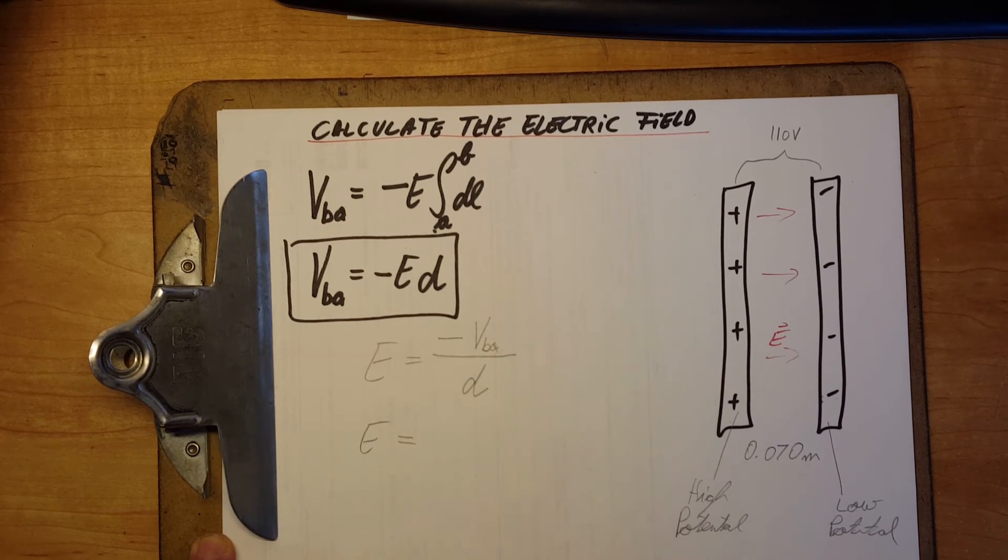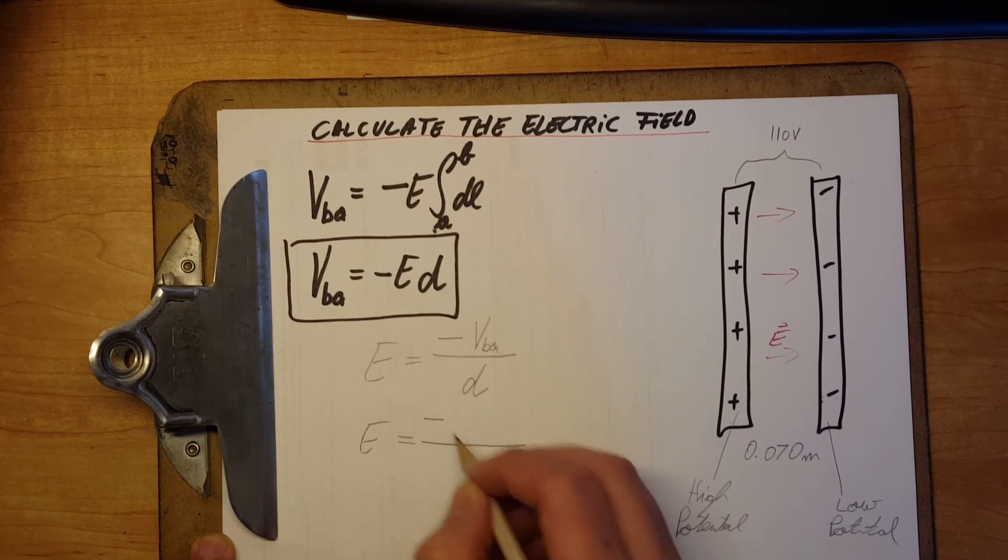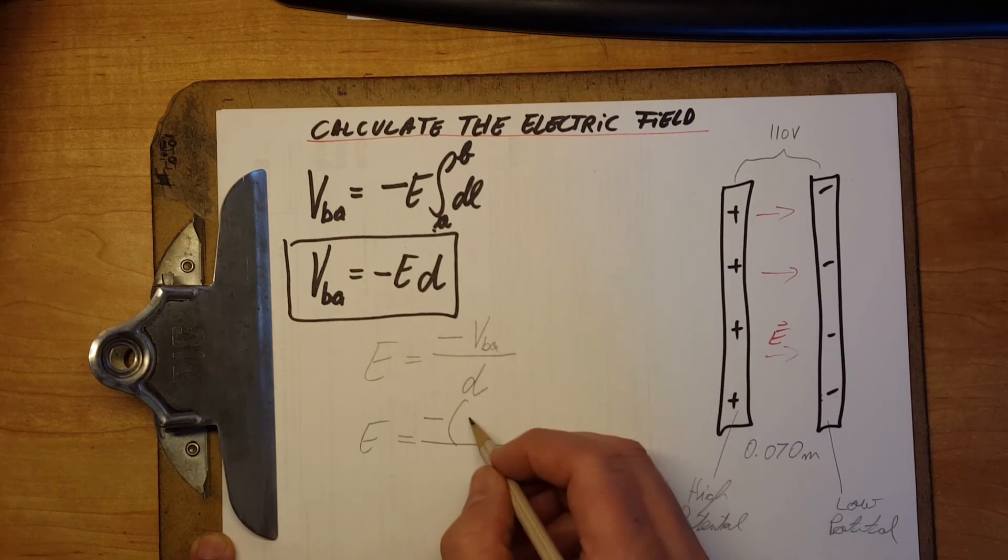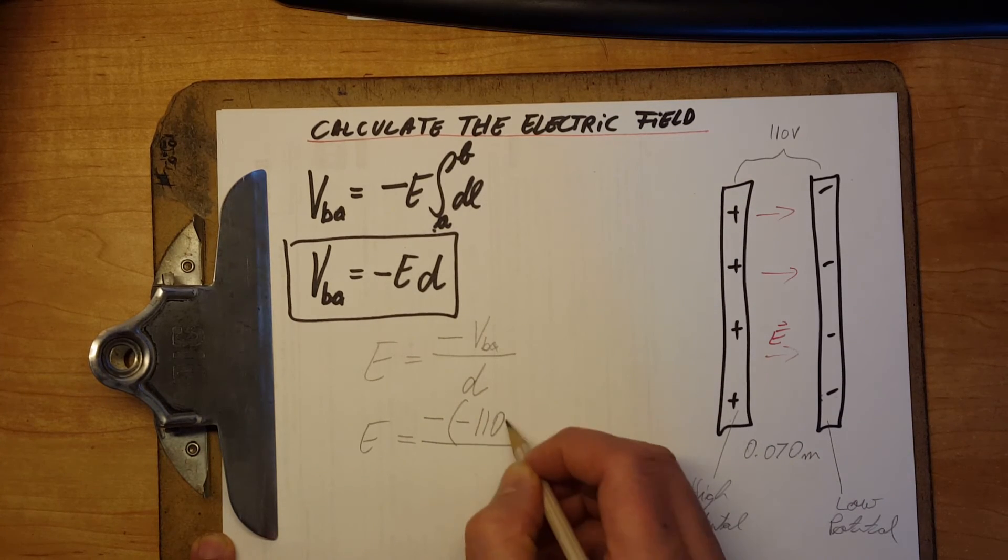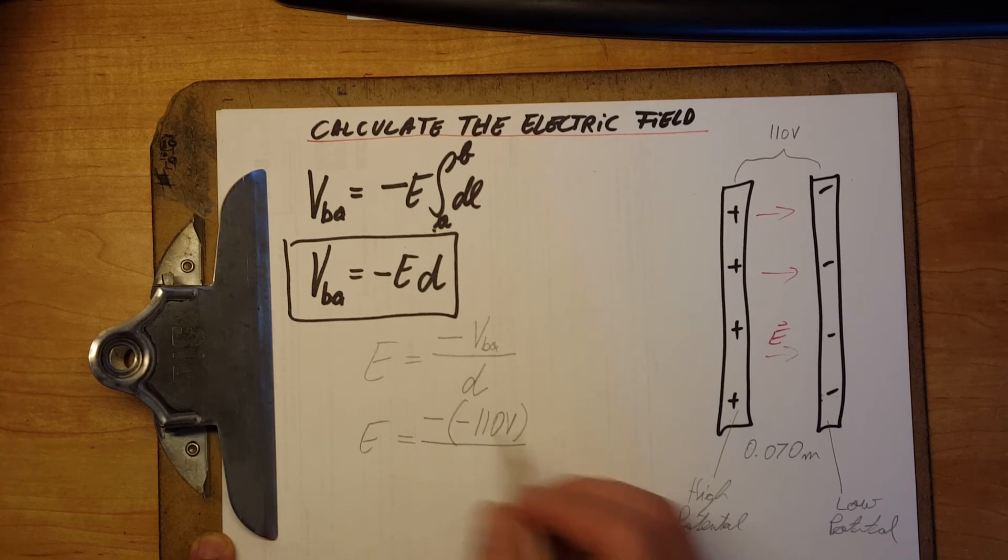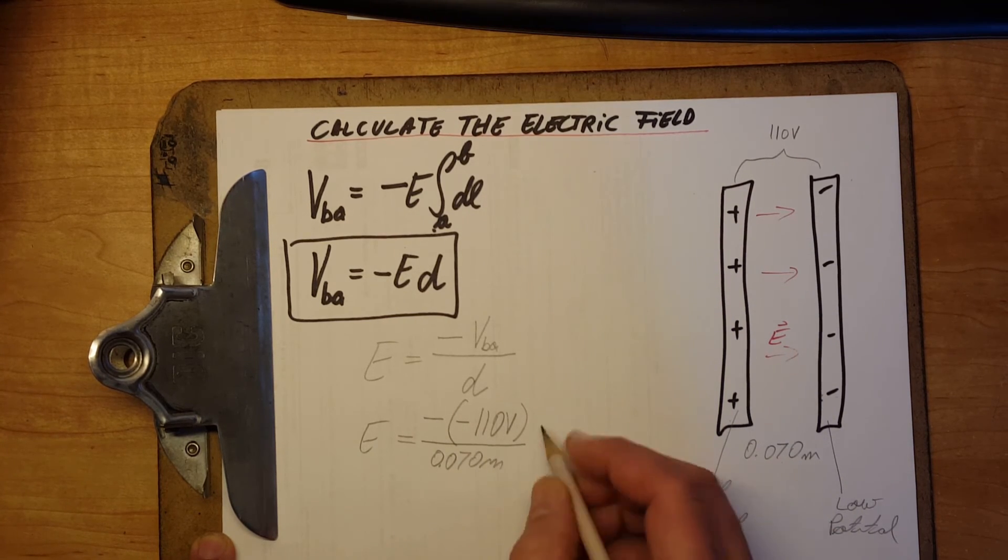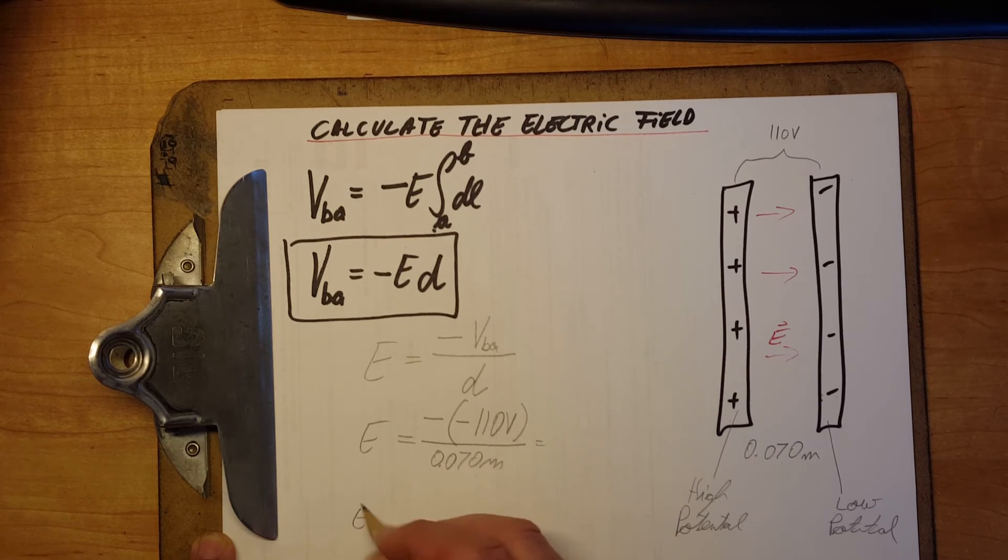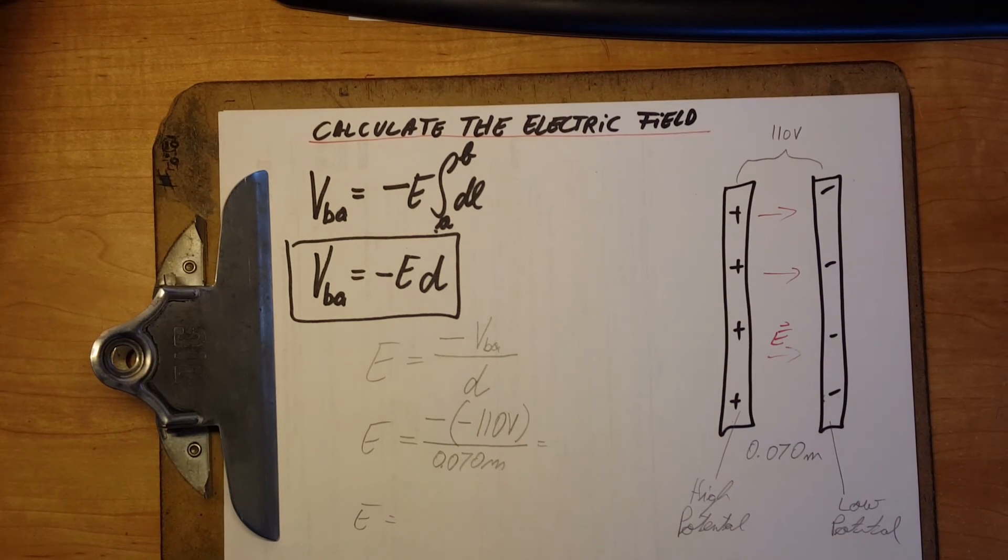We're gonna plug it in. Negative 110 volts, divided by our distance, 0.070 meters. So, E equals 1571.53, let's say.